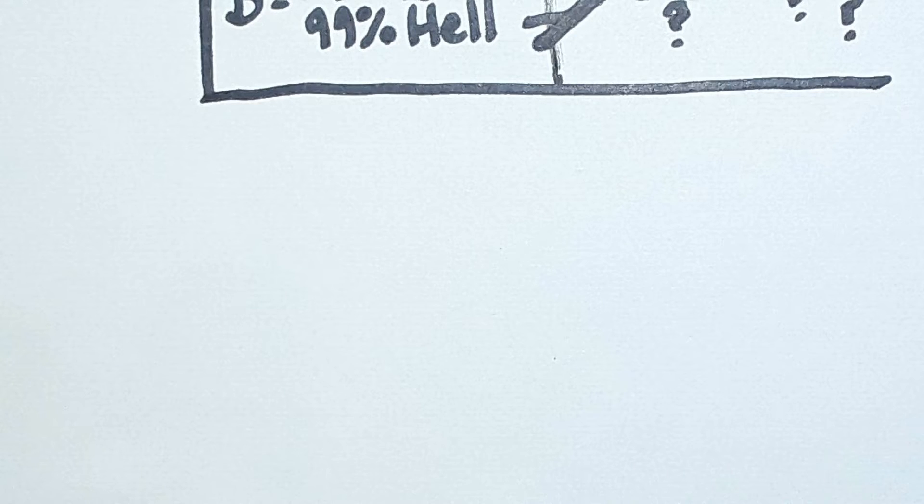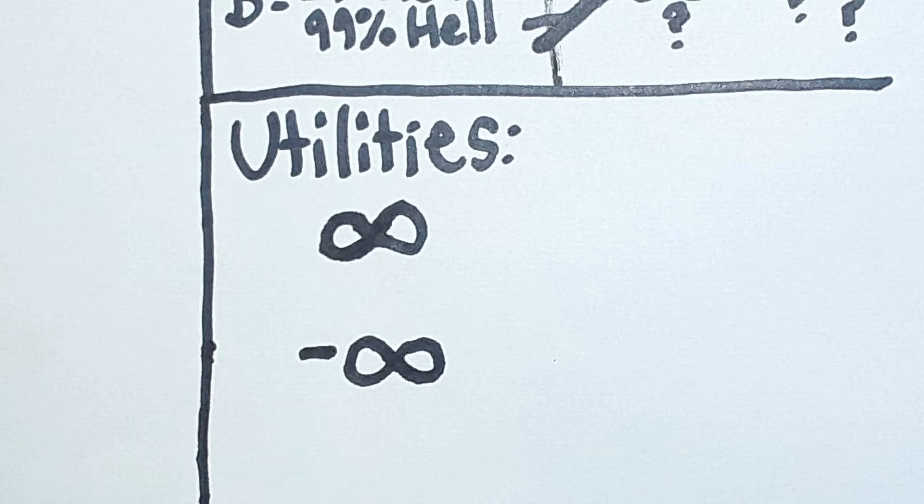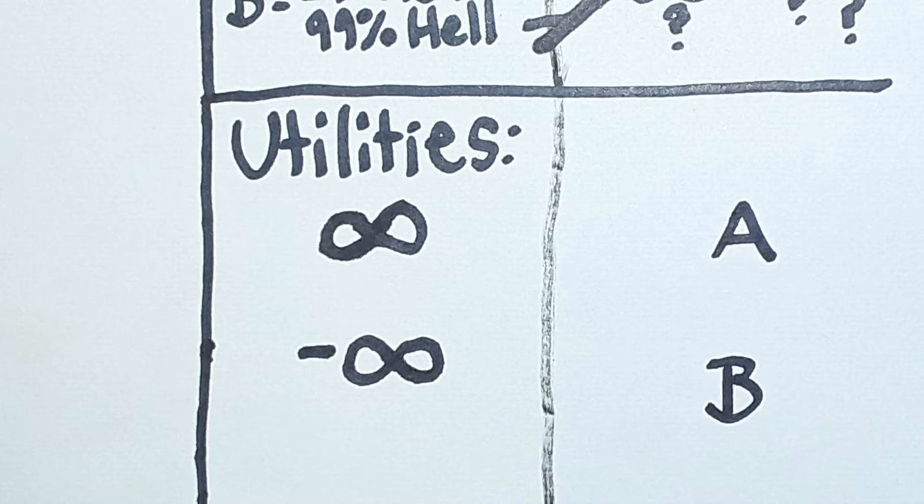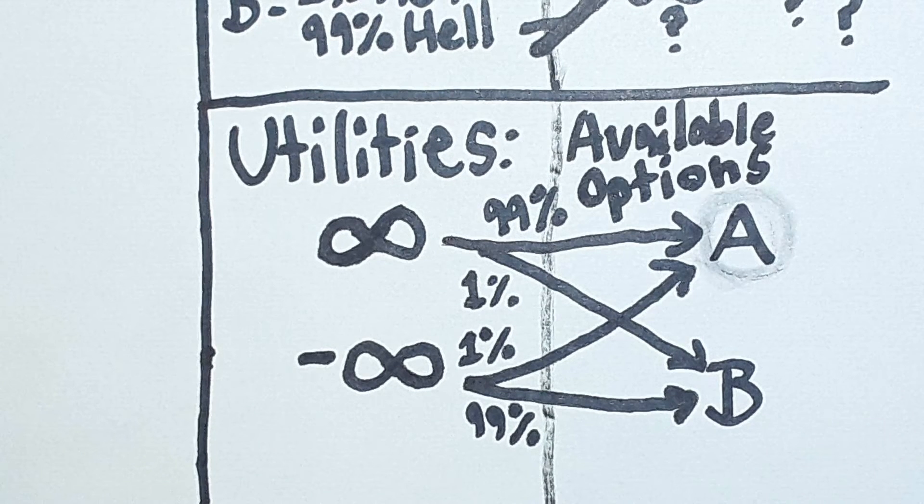But we could also invert the whole scenario. We could say, look, I have such and such possible utilities. Possibly I'll get infinite utility and possibly I'll get negative infinite utility. What's the probability that these utilities would be achieved with a given option? So we go from utility we could get to the available options.